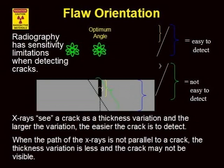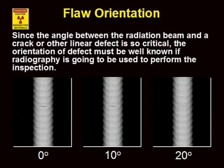This slide illustrates how the relative percent change in effective thickness varies with the position of the source relative to the crack. The crack is detectable with the source up to 10 degrees off axis, but is not detectable at 20 degrees off axis. Thus, the orientation of the defect must be well known if it is to be detected by radiographic inspection.